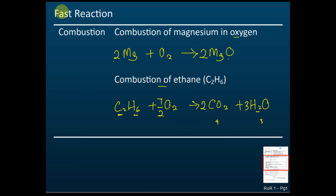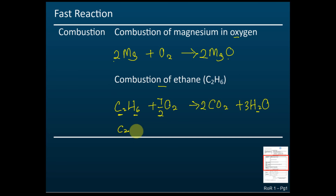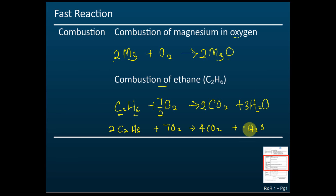For chemical equations involving combustion, you can use fractions for the oxygen coefficient — only for combustion. For other equations, you shouldn't use fractions. If you prefer no fractions, multiply everything by two: you get 2C₂H₆ + 7O₂ → 4CO₂ + 6H₂O. Both the fractional and the multiplied-by-two versions are acceptable answers.